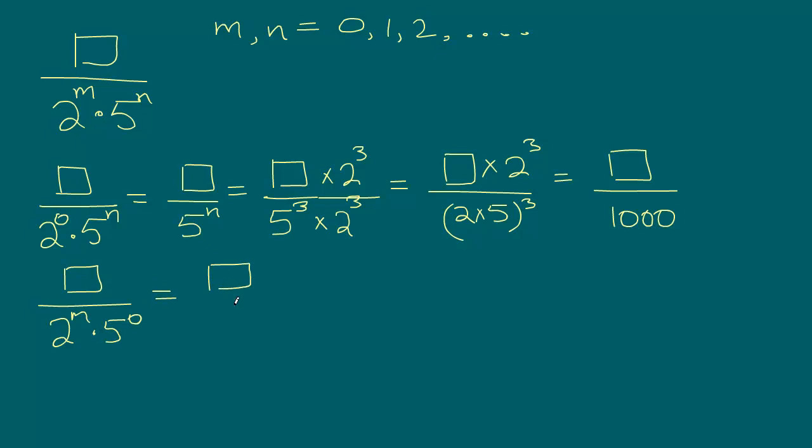So our number will look like this, the numerator times 5 to the power 0 is 1, so we will have 2 to the power m. And this time let's say m equals maybe 6 and I'm randomly taking some values because as long as it is in this range, we are good.